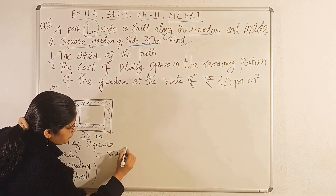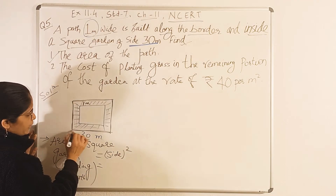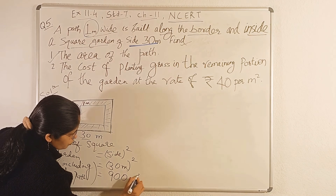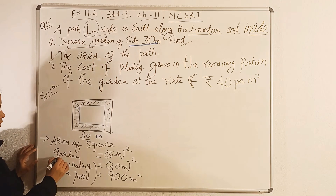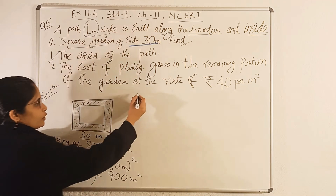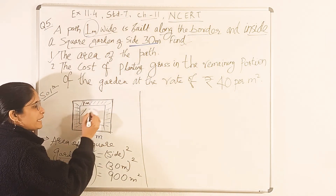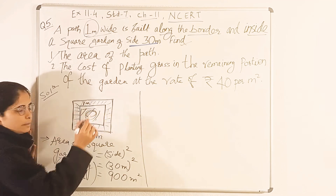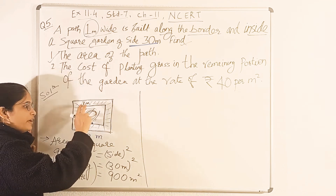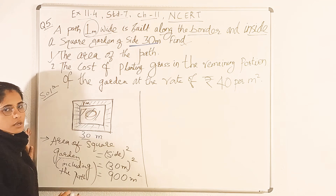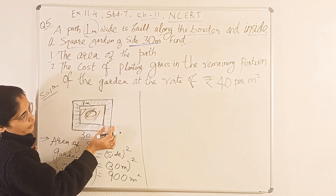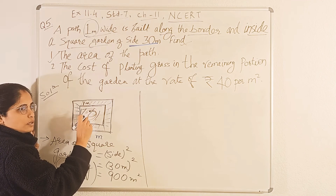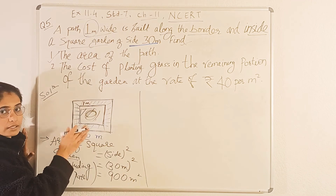Now we will find out the area of this interior part — the middle portion, excluding the path. For finding this, we need the length of the inner square. The total length is 30 meter, but we remove 1 meter of path on each side (both sides), so we subtract 2 meter. Therefore, the length of the inner garden = 30 − 2 = 28 meter.